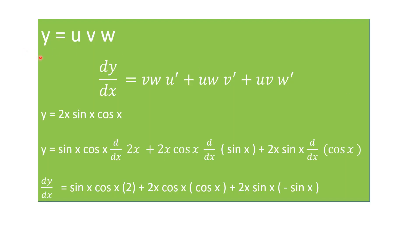Now if you get y as the product of 3 functions — y = u · v · w, where u is the first, v the second, and w the third function — the derivative is: keep the last two functions v and w as it is and multiply by the derivative of the first function u', plus take the first and third functions u and w as it is multiplied by v', plus take the first and second functions u and v as it is multiplied by w'. So dy/dx = vw·u' + uw·v' + uv·w'.